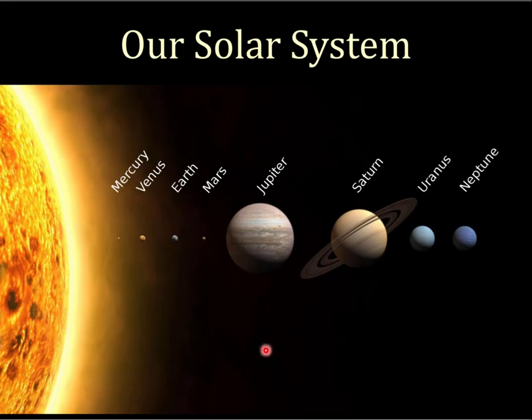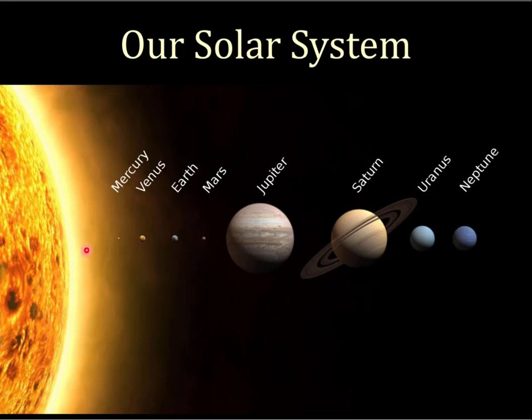Rock in general has a density of about three. The terrestrial planets have a density of about five because they have iron, nickel, and uranium cores that drive up their densities. We'll talk more about that when we talk about our Moon.